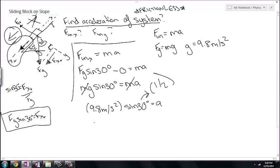And because the sine of 30 degrees is always one-half, this is going to be 9.8 meters per second squared times one-half is equal to a. 4.9 meters per second squared in the positive x-direction is equal to a. And that's my final answer.